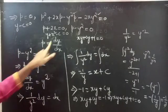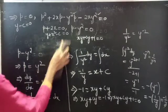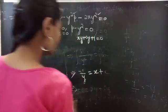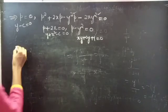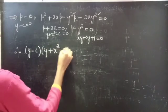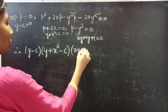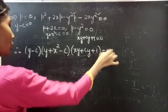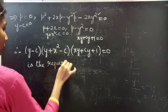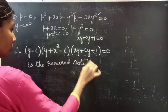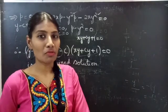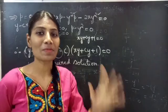The combined form of these three solutions is the required solution for the given differential equation. Therefore, (y minus C)(y plus x squared minus C)(xy plus Cy plus 1) equals zero is the required solution. We have seen a problem from the solvable for P method in this video. Hope you understood. We'll see you in the next video. Bye-bye, thank you.